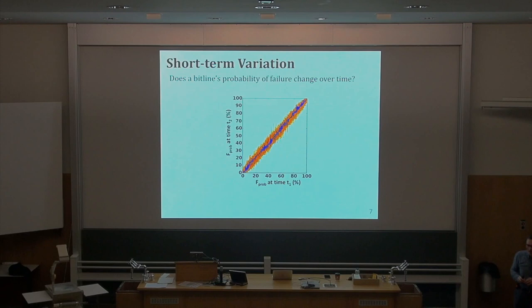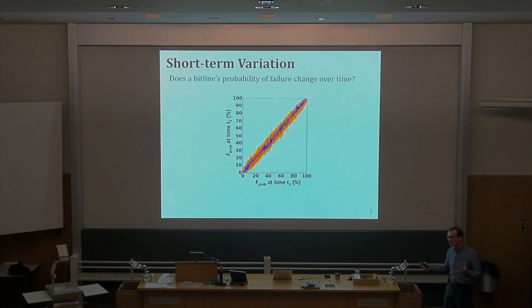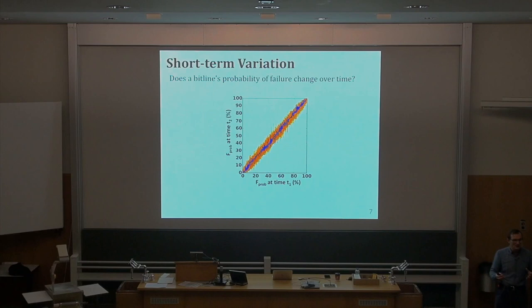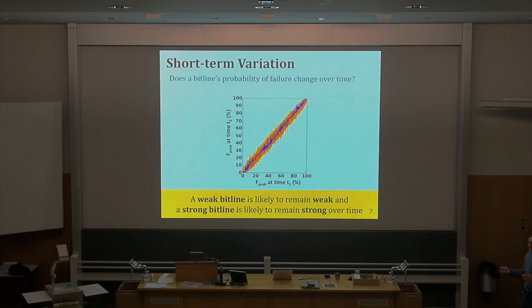Time t1 and t2 were not years here, so no aging effects are involved — the maximum difference tested was two weeks. You don't get much variation in latency within two weeks — really reliable operation latency. And if you don't trust your latencies after two weeks, you can always re-profile. The key conclusion is that a weak bit line is likely to remain weak and a strong bit line is likely to remain strong over time.